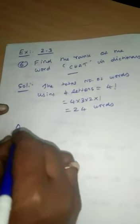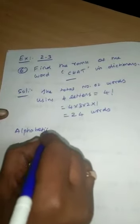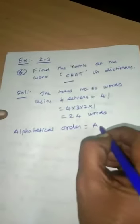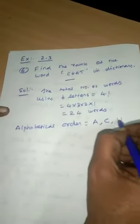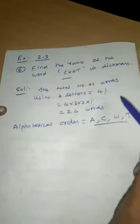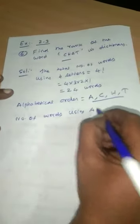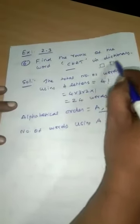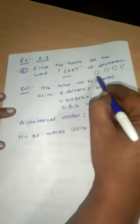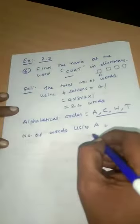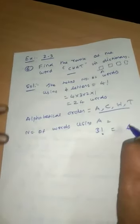The alphabetical order of these four letters: first in the dictionary is A, next is C, then H, and T. This is the alphabetical order. Number of words using A first: four boxes, first A, remaining is three letters, that is three factorial, equal to three into two, which is six words we can form using first letter A.